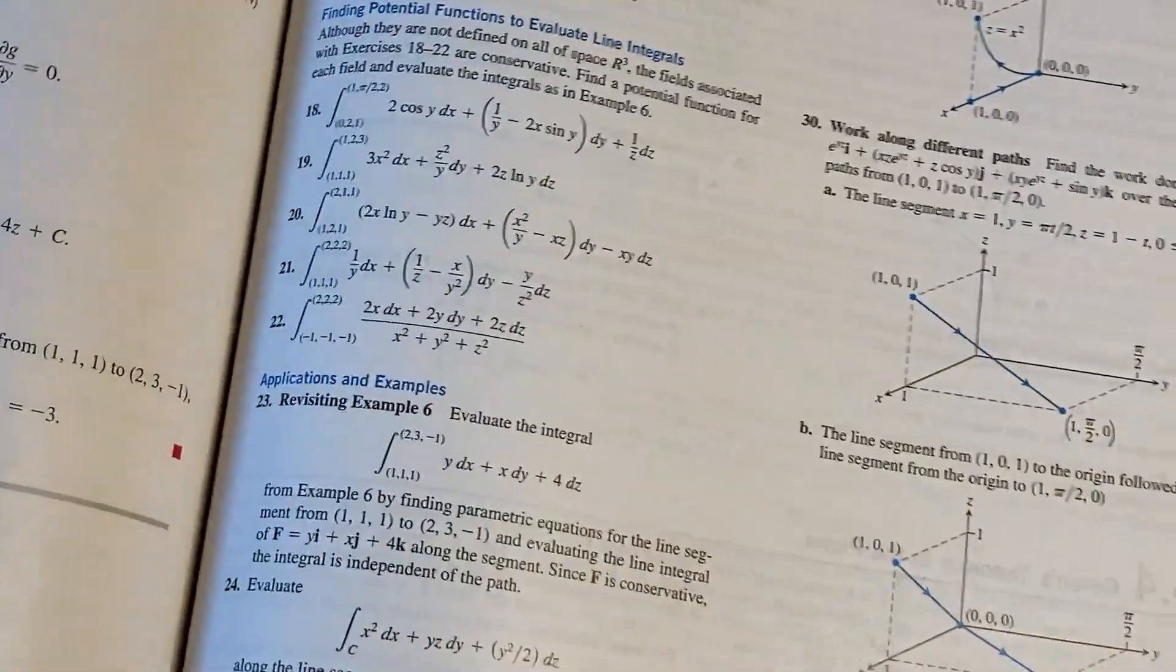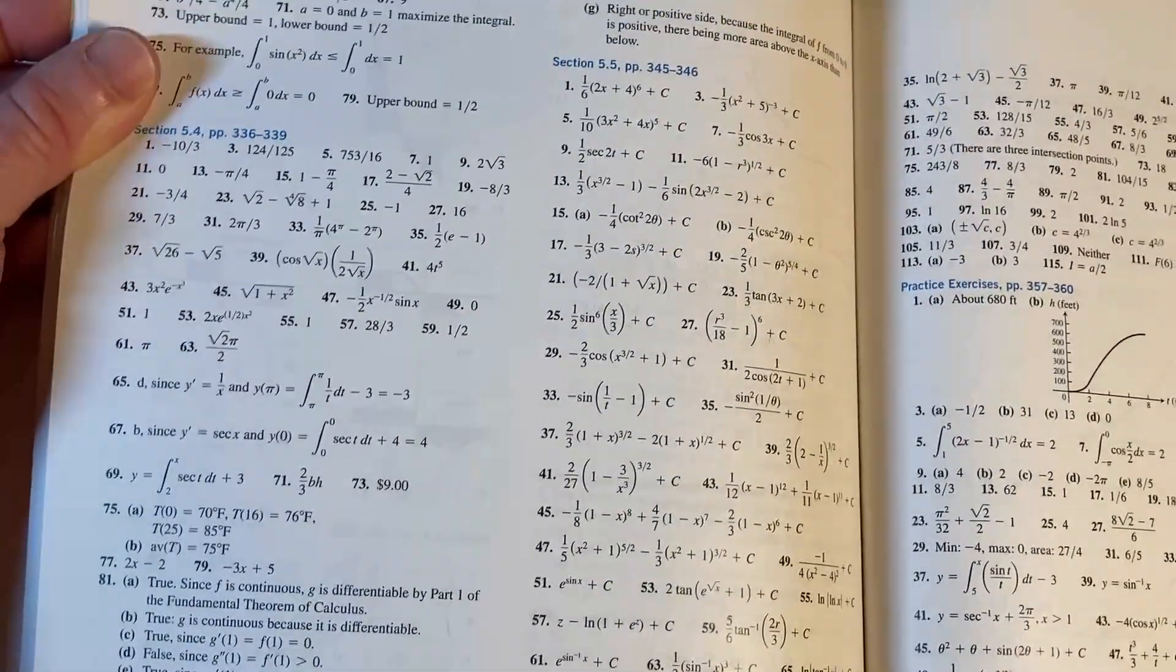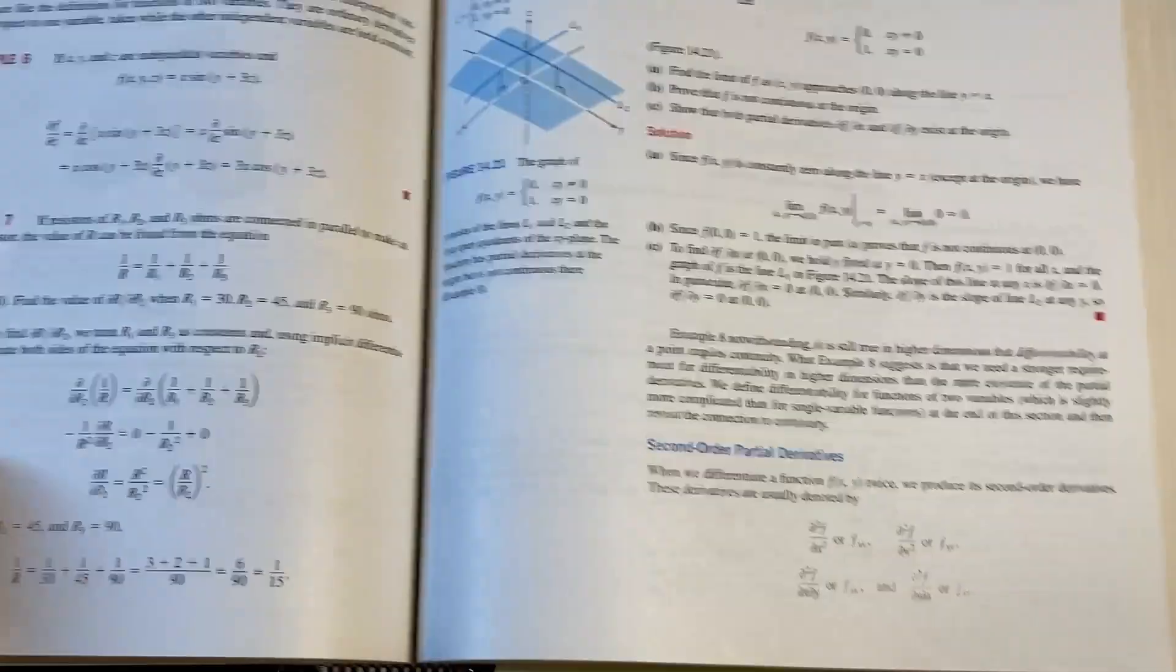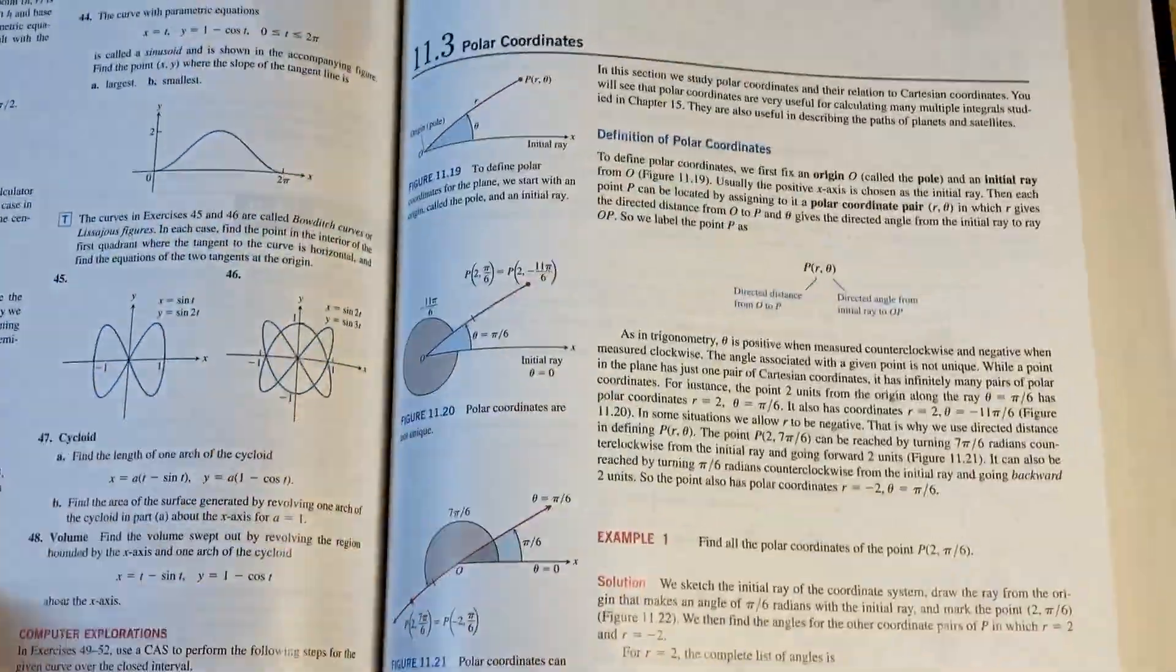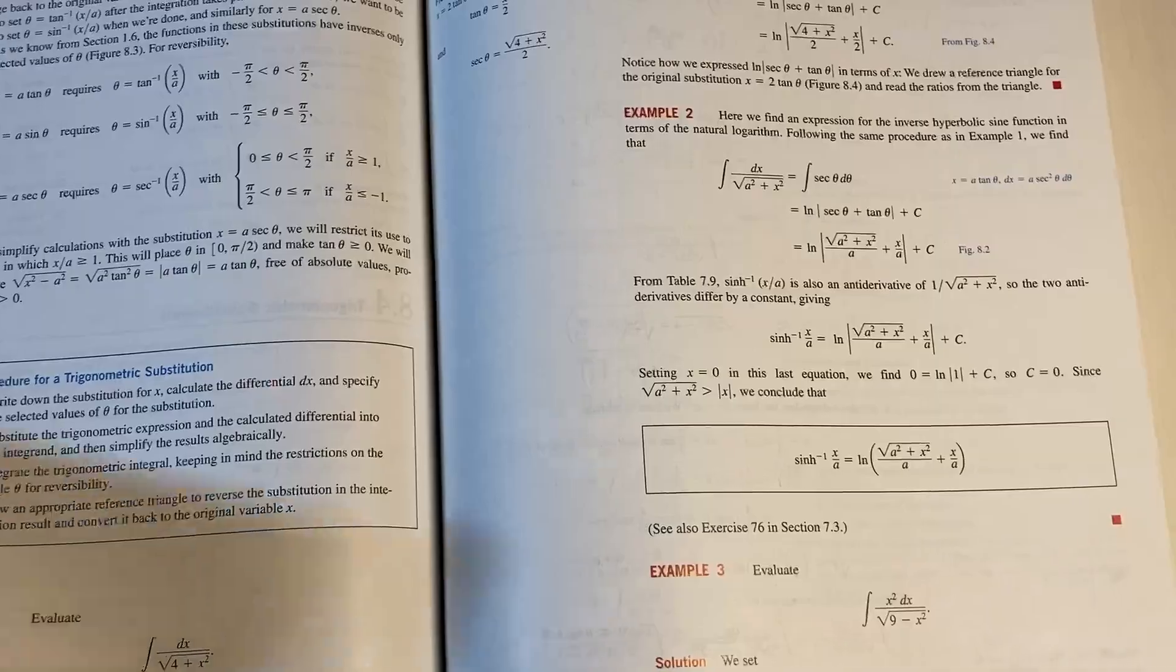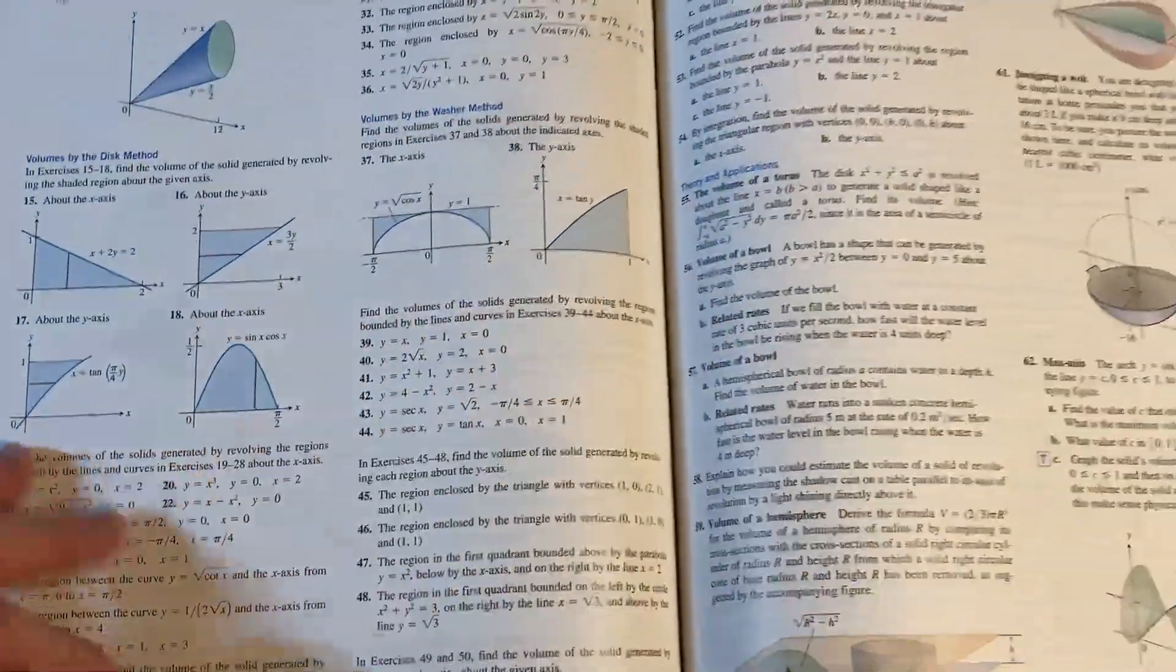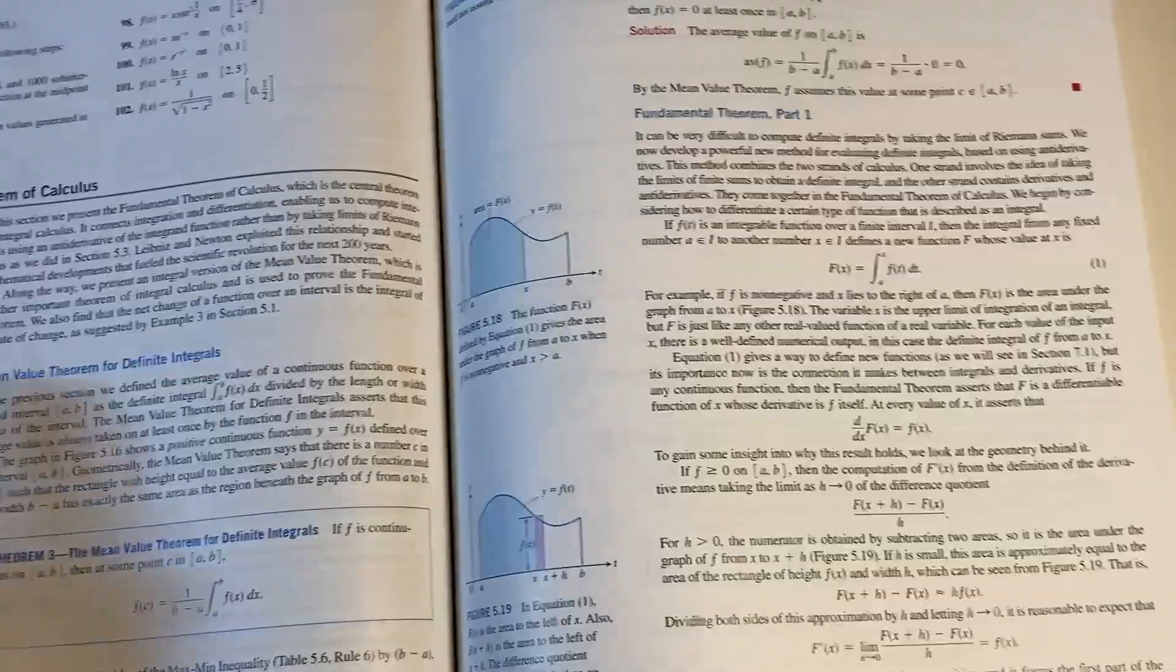And then you have answers to the odd numbered exercises in the back of the book, which is awesome because that way you can check your work. Which is super useful. Look at all of these answers. Wow. It's just completely insane. So this book contains tons of exercises, tons of examples, and yeah, it's worth owning. This is a great calculus book. You can use this book to learn calculus. With this book alone, you can make some serious progress.